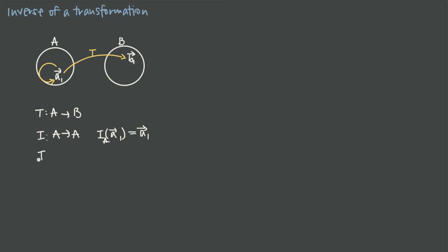In the same way, I could have an identity transformation for the subset B — I_B — that maps vectors from B to vectors in B. More specifically, if I start at the vector B1 and apply the identity transformation, I'm going to end up at the vector B1. So whereas transformation T maps me from one vector to a different vector, the identity transformations I_A and I_B each map a vector right back to that same vector.